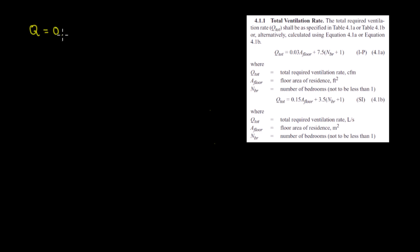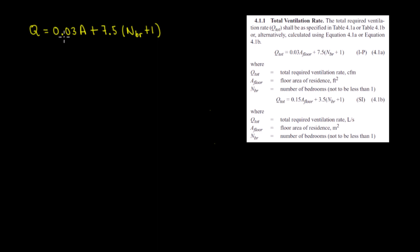They call it Q total — in my other videos I call it outside air just for simplicity. So this Q total is going to be equal to 0.03 times the area, plus 7.5 times the number of bedrooms plus one. So 7.5 is the rate, and 0.03 is the area coefficient.